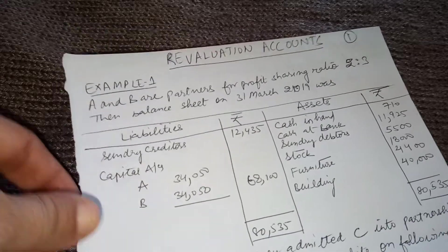C's share is 1/3. The remaining profit is 1 minus 1/3 = 2/3. A's old share was 2/5, so A's new share = 2/5 × 2/3 = 4/15. B's old share was 3/5, so B's new share = 3/5 × 2/3 = 6/15. The new ratio for A, B, and C: 4/15 : 6/15 : 5/15, which gives a new profit sharing ratio of 4:6:5.